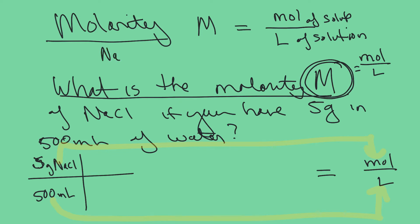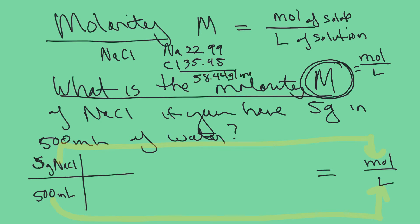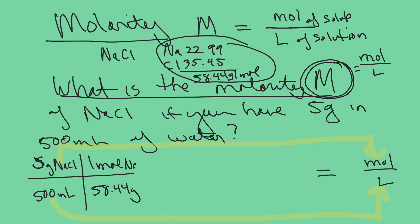I have five grams of sodium chloride and 500 milliliters of solution. I wrote it this way because I clearly want volume on the bottom and moles on the top. I can get to moles using factor labeling. So now I just need the molar mass of sodium chloride — sodium is 22.99 grams per mole and chlorine is 35.45, giving 58.44 grams per mole. I put the molar mass on the bottom and one mole on the top. My grams cancel and now I'm at moles.